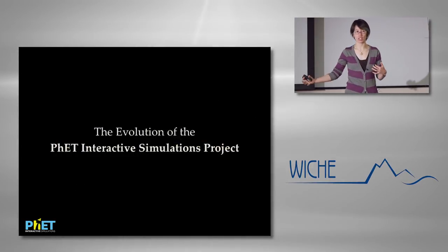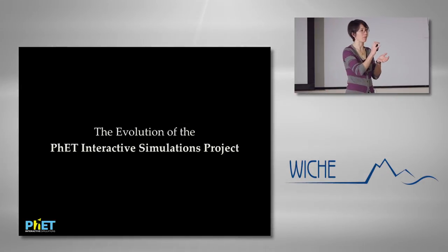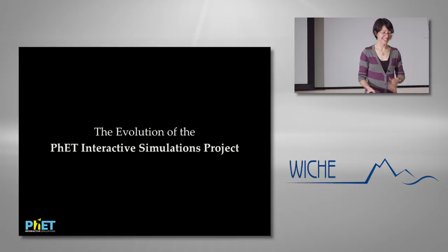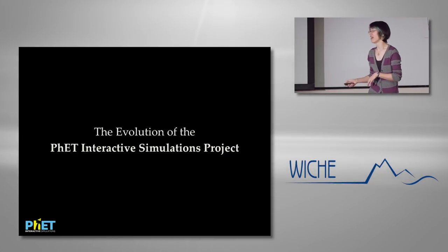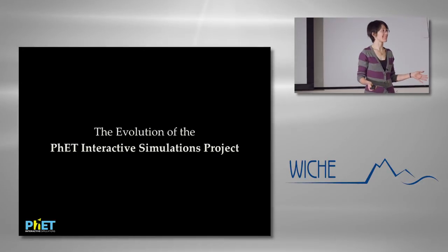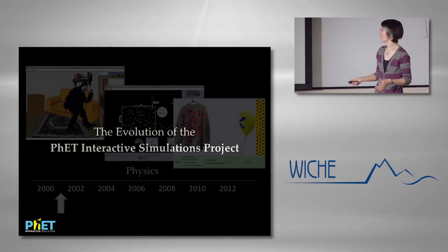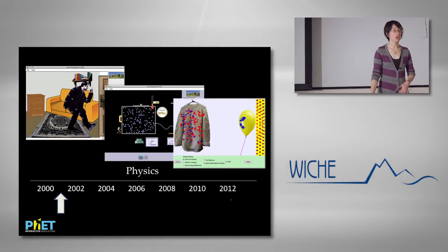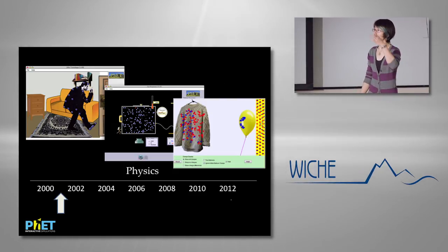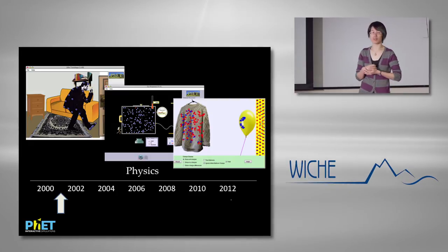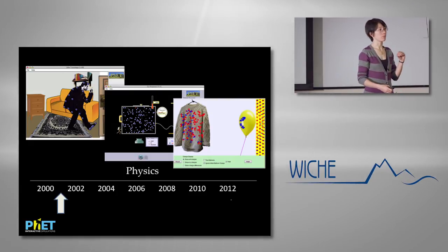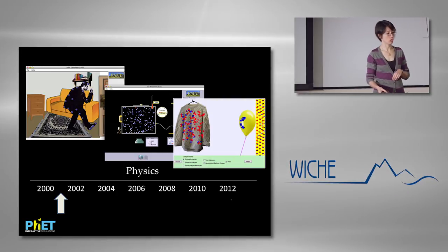To give you a sense of where the project comes from, I'll take you on the speediest tour of the years the project has been active, because it'll give you a sense of why we have more sims in some areas than others. The project started in physics — it was originally funded with seed money from Carl Wieman's Nobel Prize money as well as a few NSF grants — so our first sims were developed for college-level physics education.